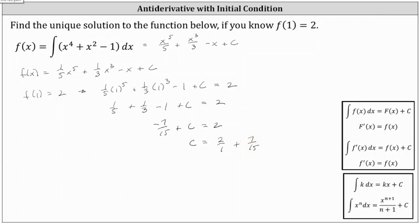Obtaining a common denominator of 15, we have c equals 30 fifteenths plus seven fifteenths, which is 37 fifteenths.